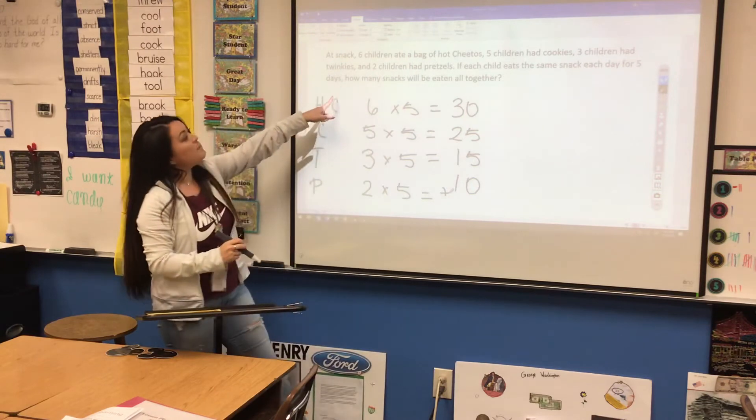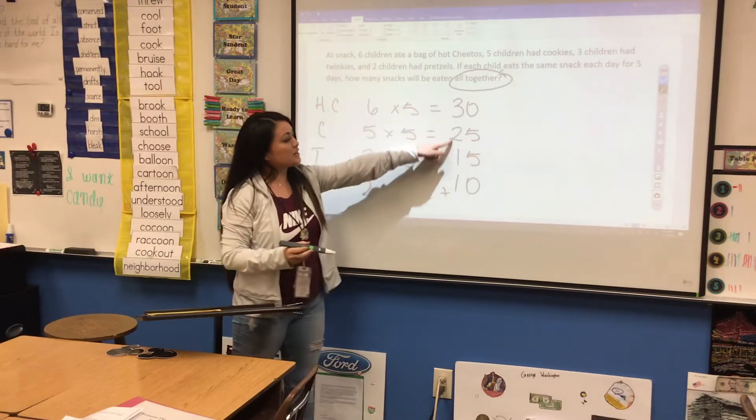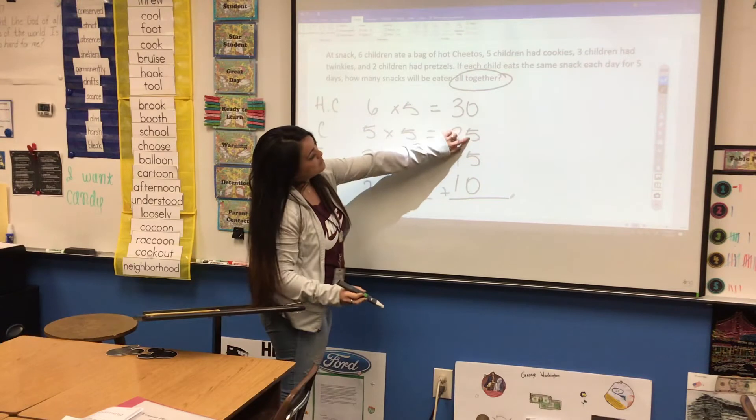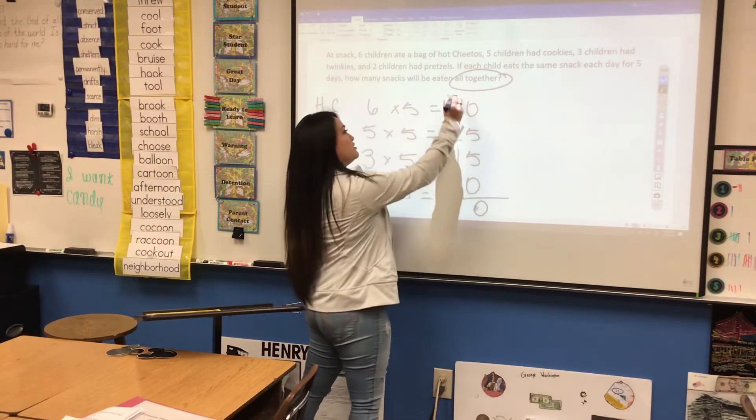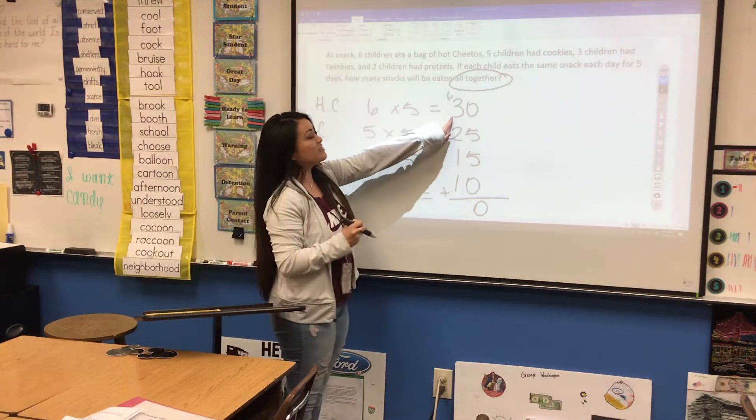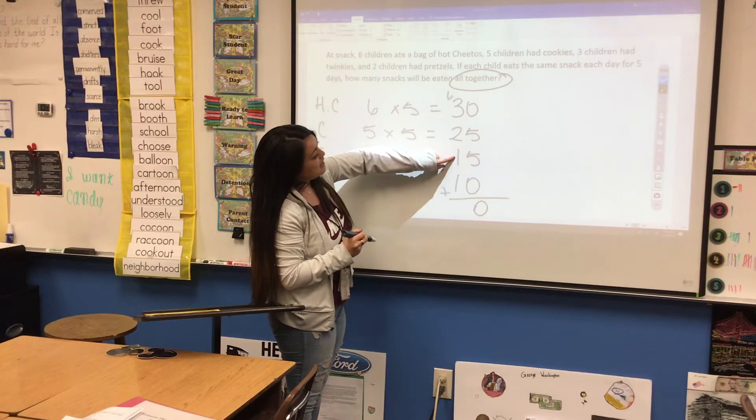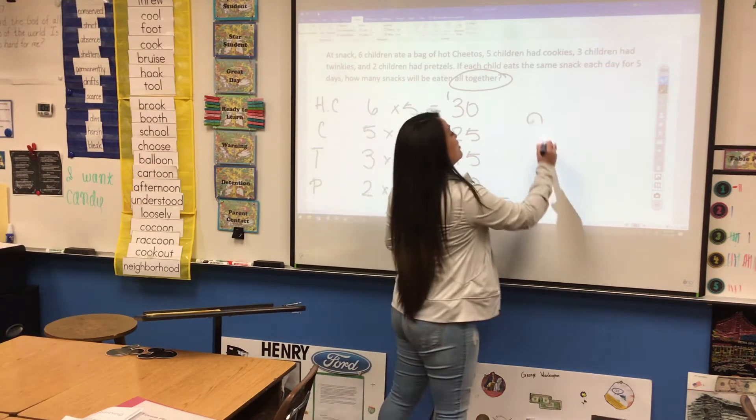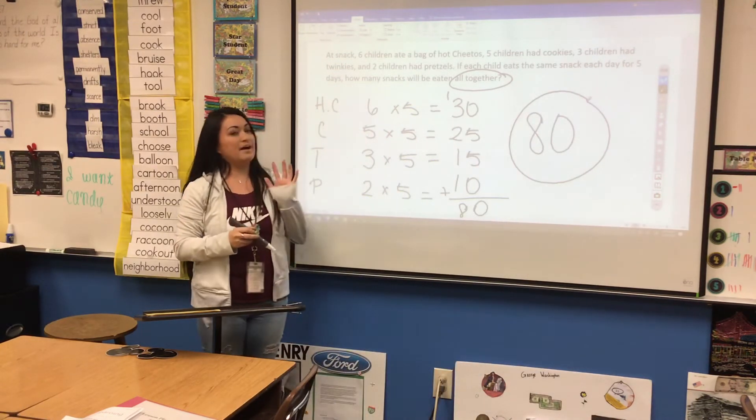So now it's asking, how many snacks will be eaten altogether? So what we're going to do now is we're going to take these four numbers and add them all together. Zero plus 5 plus 5 plus 0, that's 10. So your 0 goes down here. You carry your 1 up top to the tens place. Then you're going to go 1 plus 3, that's 4. 4 plus 2 is 6. 6 plus 1 is 7. And 1 plus 7 is 8. So 80 will be all of the snacks that the students ate over the amount of five days.